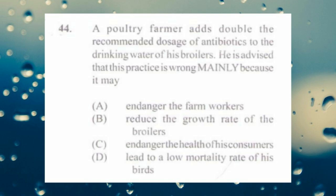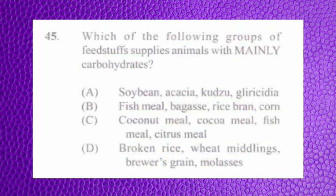Question number forty-four: a poultry farmer adds double the recommended dosage of antibiotics to the drinking water of his broilers. He is advised this practice is wrong mainly because it may a) endanger farm workers, b) reduce growth rate of broilers, c) endanger the health of his consumers, d) lead to a low mortality rate. The answer is c) endanger the health of his consumers.